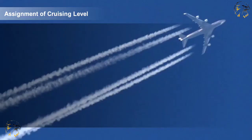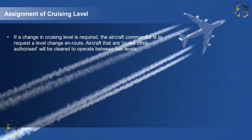An area control centre will normally allocate only one cruising level to an aeroplane for flight in the control area or for flight entering another control area. There are circumstances that can influence the allocation of your cruising level. If a change in cruising level is required, the aircraft commander is to request a level change en route.